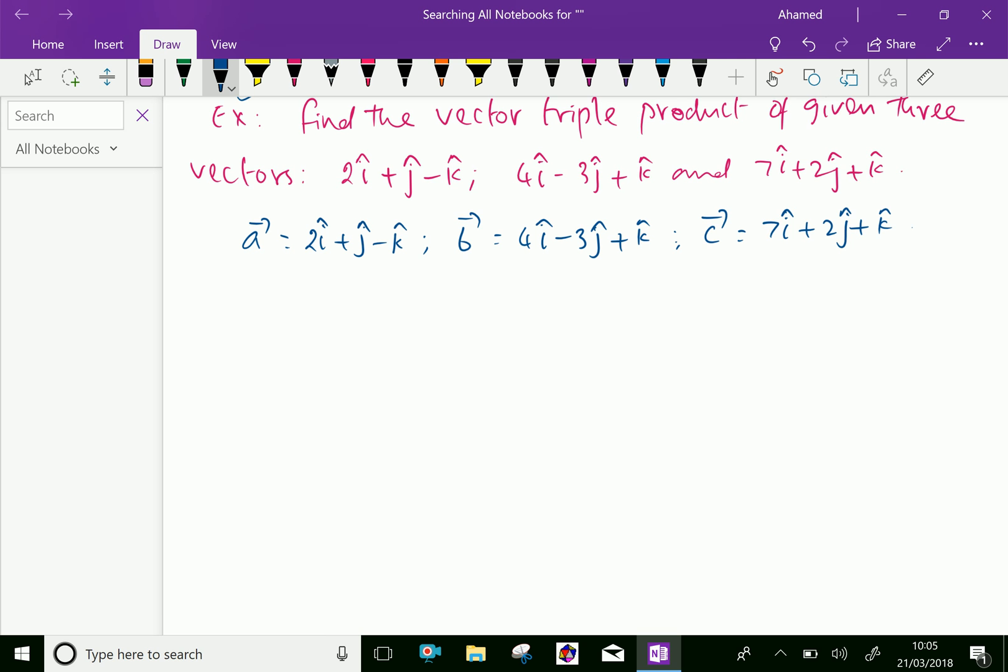Now, the cross product of these three vectors, vector a cross vector b cross vector c, equals vector a dot vector c into vector b minus vector a dot vector b into vector c.